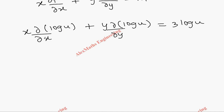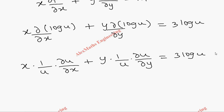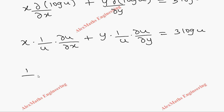Now we differentiate log u with respect to x as a partial derivative. The derivative of log u is 1 by u, and using the chain rule, u should also be differentiated with respect to x, giving (1/u) times ∂u/∂x. Similarly, the y term gives (1/u) times ∂u/∂y. So we have x times (1/u) times ∂u/∂x plus y times (1/u) times ∂u/∂y equals 3 log u.